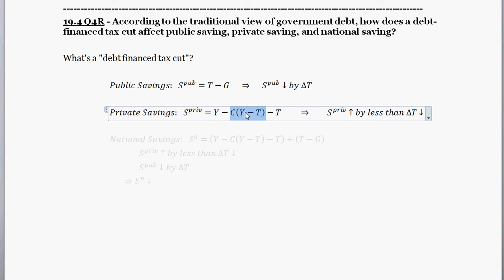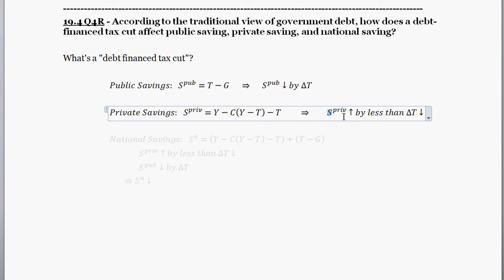So you have an increase in consumption and a decrease in taxes — which of these two effects is going to be more dominant? Taxes decrease by exactly the amount of the tax cut. Consumption increases by the marginal propensity to consume, which is definitely going to be less than one — between zero and one. So consumption is not going to increase by as much as that decrease in taxes. Overall, private savings is going to increase, but by less than the change in taxes.